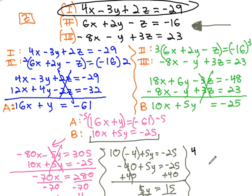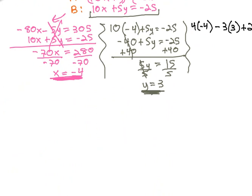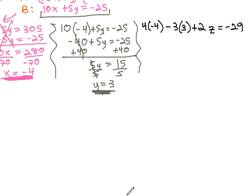4x, x we found out was negative 4, minus 3y, y we just found out was 3, plus 2z, and I'm going to go off my screen here in a minute. I'll come back to it I promise, equals negative 29. Give me a second to do a little scrolling. Now we can see everything.